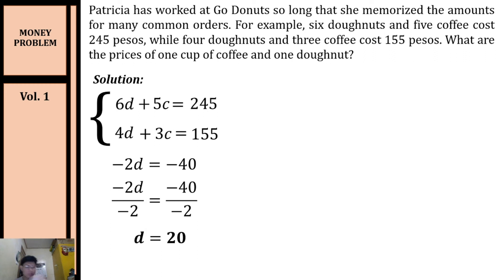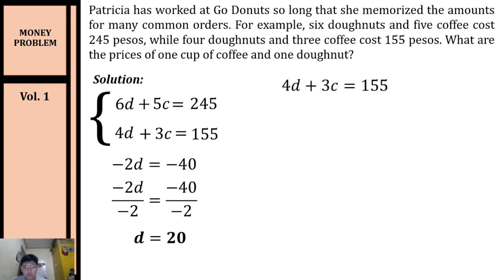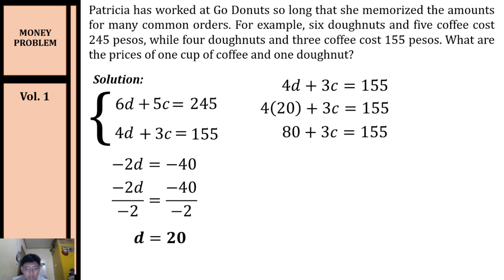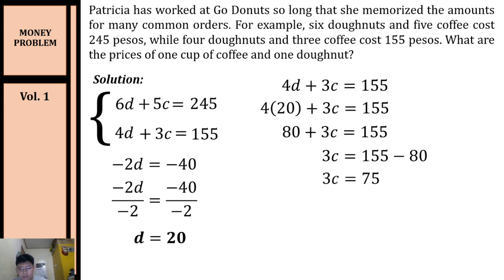Solving for d by dividing both sides by negative 2, d = 20. The price of a donut is 20 pesos. Substituting d = 20 into the second equation: 4 times 20 equals 80. Transposing 80: 3c = 155 minus 80 = 75. Dividing both sides by 3, c = 25. A cup of coffee costs 25 pesos.